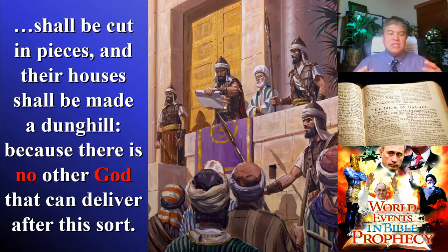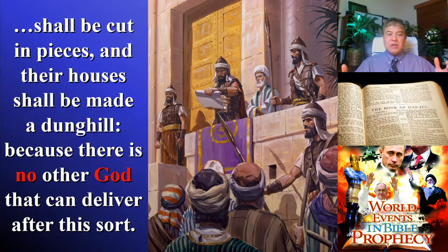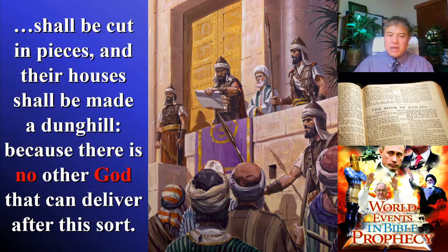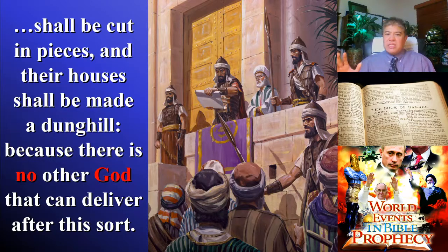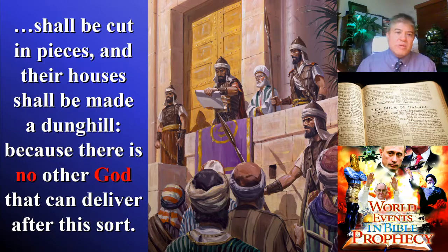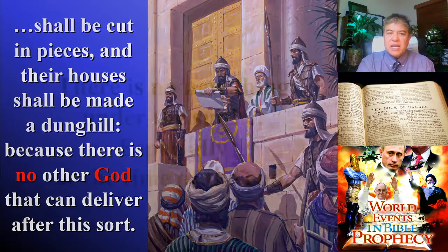Nebuchadnezzar set up this image and required the whole world to worship it. But three Hebrews — a small minority among the massive majority — refused to bow down. In the last days, there will only be a minority of people who refuse to bow down and falsely worship a false god. The king got angry, threw them into the fiery furnace, God was there with them and delivered them, and then Nebuchadnezzar made his decree that there is no other God than the God of Shadrach, Meshach, and Abednego.